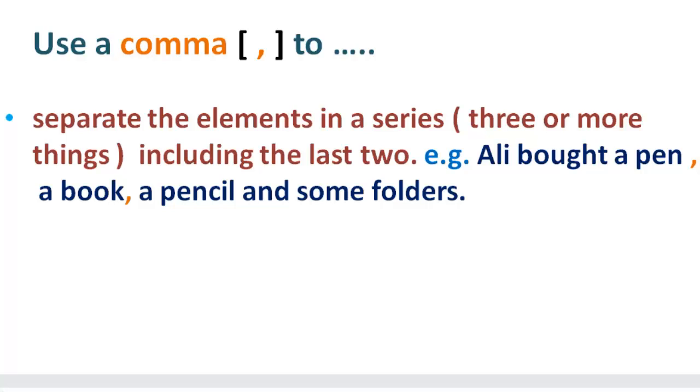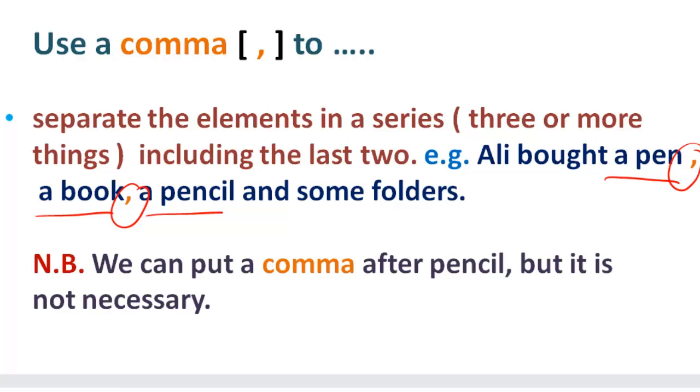Here are some things in a series like a pen, a book, a pencil, and some folders. To separate the elements in between, we can find comma after a pen, after a book. Sometimes we also put a comma before 'and,' but this is not always necessary. We can put a comma after pencil, but it is not always necessary.